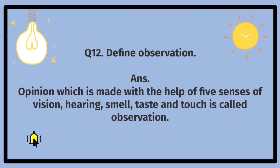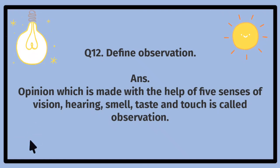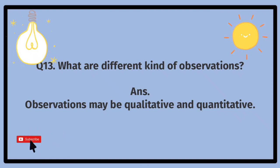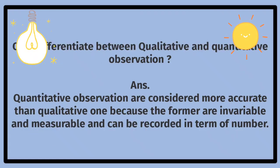Define observation. An opinion which is made with the help of five senses of vision, hearing, smell, taste, and touch is called observation. What are different kinds of observations? Observations may be qualitative and quantitative. Differentiate between qualitative and quantitative observation. Quantitative observations are considered more accurate than qualitative ones because the former are invariable and measurable and can be recorded in terms of numbers.